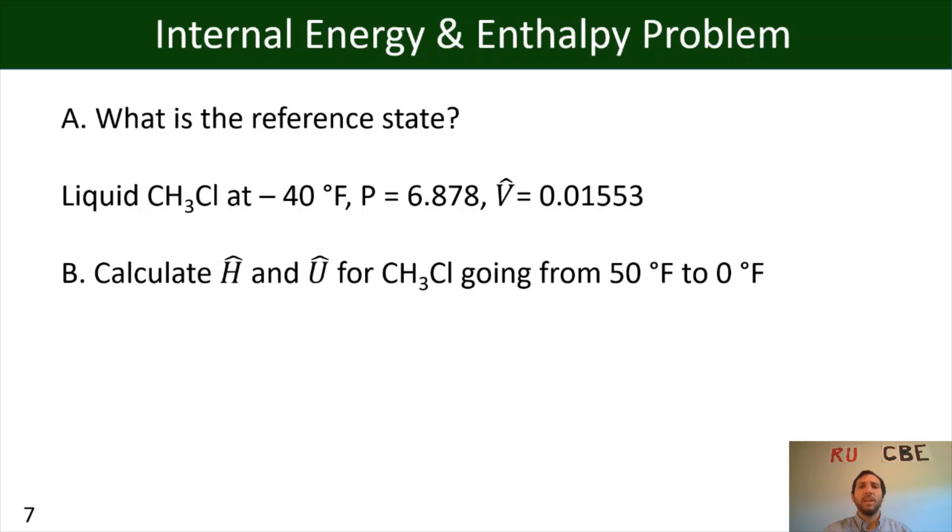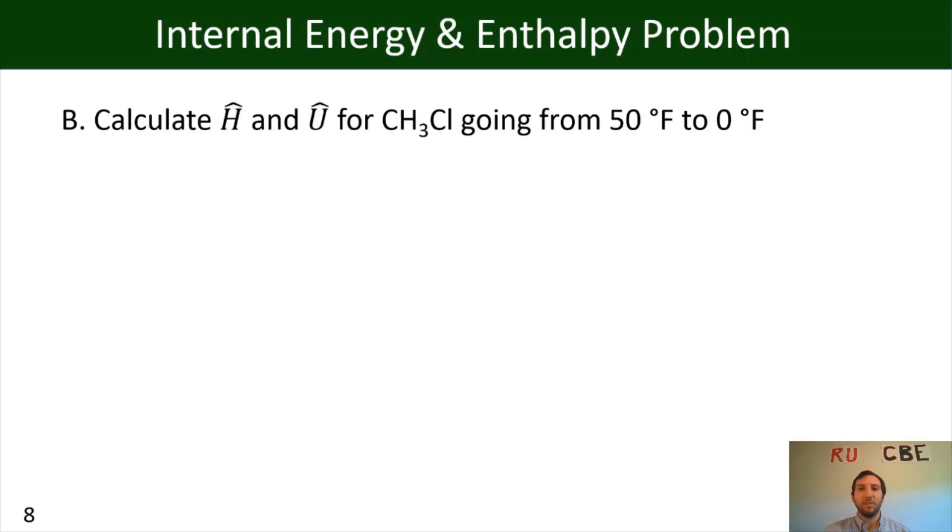So if we approach this problem and start with our specific enthalpy, we're going to look at the change in specific enthalpy and look at final enthalpy minus initial enthalpy. And so if we take some of those values from the table, we'll have 196.23 BTUs per pound mass minus 202.28 BTUs per pound mass,